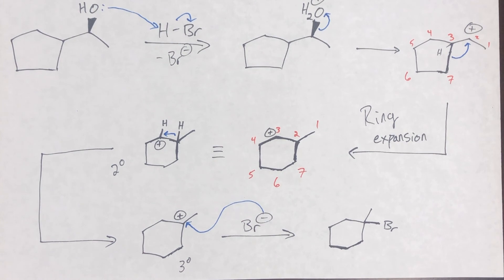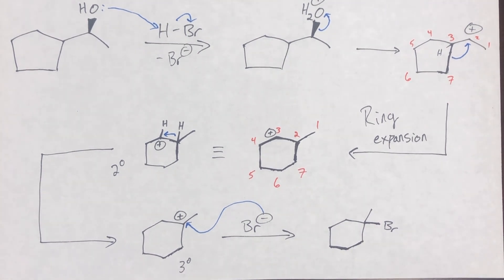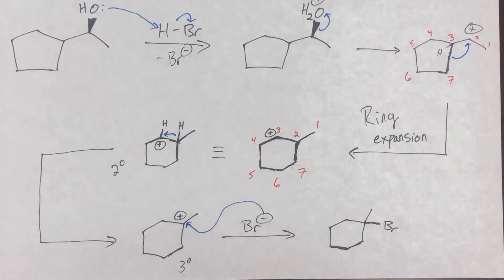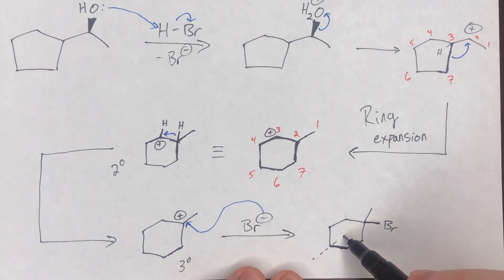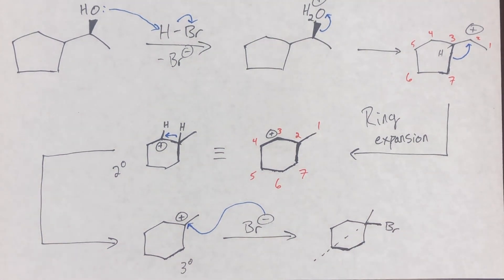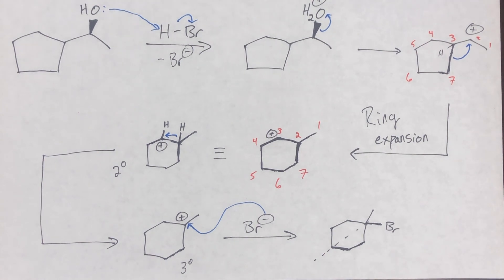Regarding chirality: if your final product is chiral, you're going to get a racemic mixture because the carbocation is a planar, sp2-hybridized carbon. Bromine can approach from above or below the plane, creating either a dashed or wedged bromine — giving a pair of enantiomers, assuming no other chiral centers. In our case this molecule is not chiral, so stereochemistry wasn't a concern here. But keep in mind: carbocations attacked by a nucleophile will create racemic mixtures if the product is chiral.